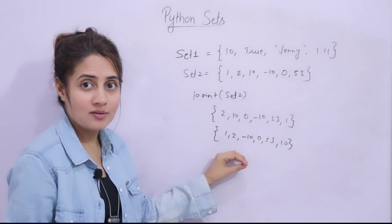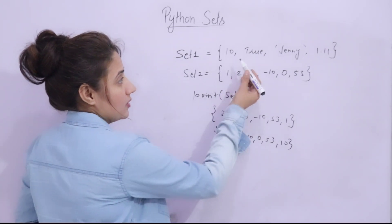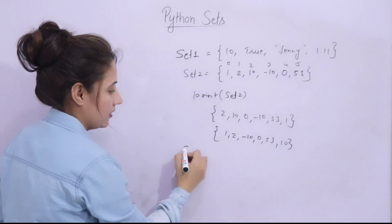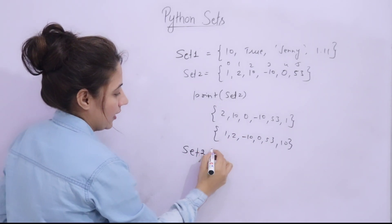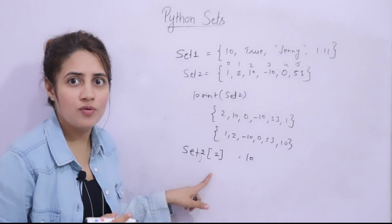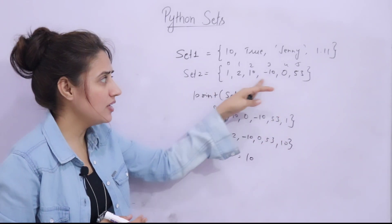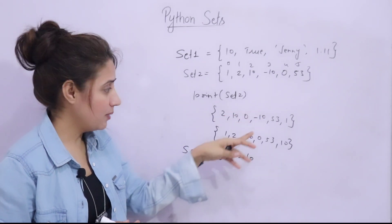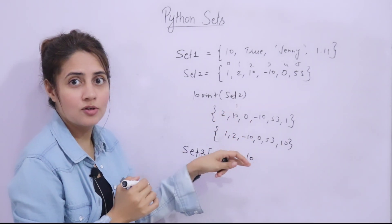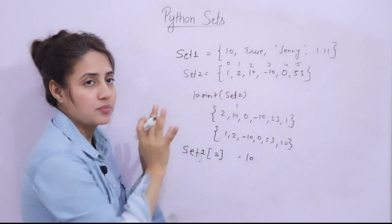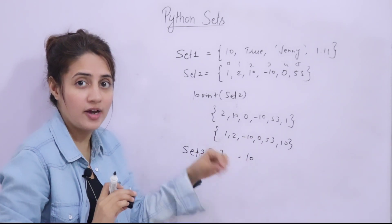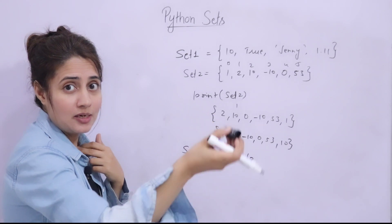Because set items are unordered, indexing is not allowed on a set. Indexing means accessing items using index positions like 0, 1, 2, 3, 4, 5. If I write set2[2] thinking it will give me the item at index 2, that is not allowed. Because the items have no defined order, maybe this time 10 is at the first index and next time at the last index. So you cannot access set items using indexing. In lists and tuples, indexing is possible.